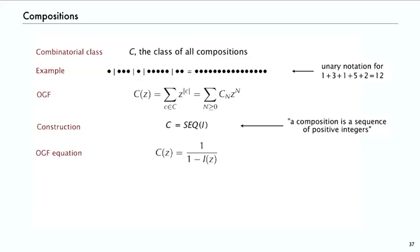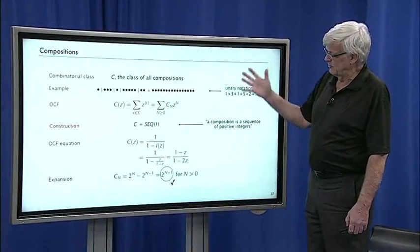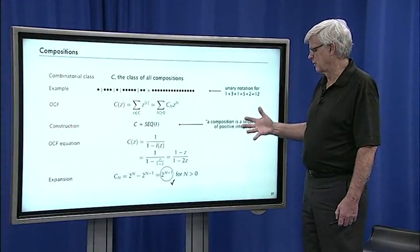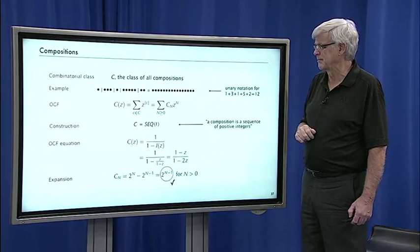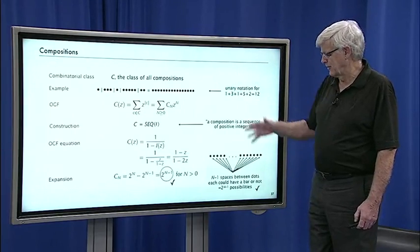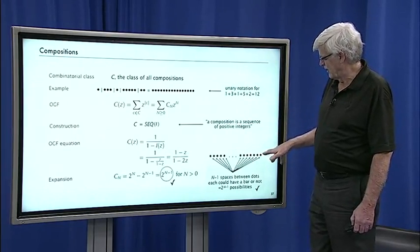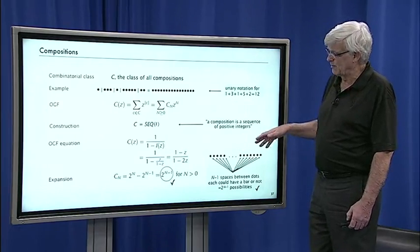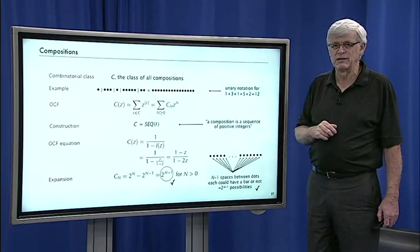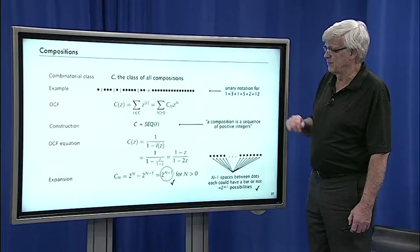The generating function for a sequence of positive integers is immediately 1 over 1 minus the generating function for integers. And that one's z over 1 minus z. And if you do the math, you get 1 minus z over 1 minus 2z for the OGF for compositions. And then expanding that, it's 2 to the n minus 1 different compositions. So very straightforward to analyze this combinatorial structure with the symbolic method. You can argue combinatorially if you want. There's n minus 1 spaces between the n dots and every one of them could have a bar or not. So that's why there's 2 to the n minus 1 possibilities in terms of number of compositions.